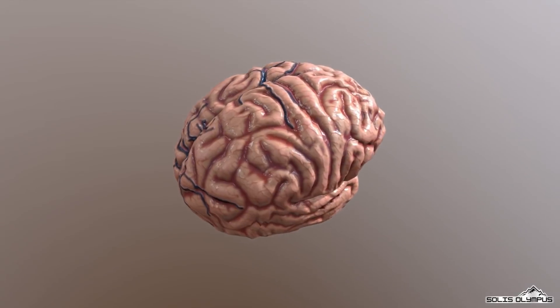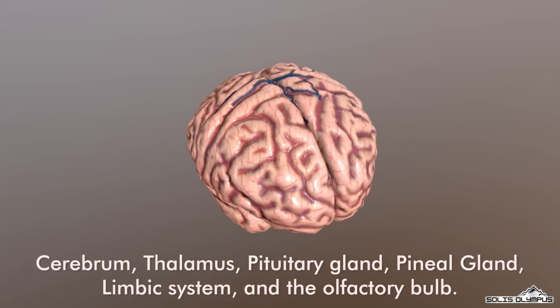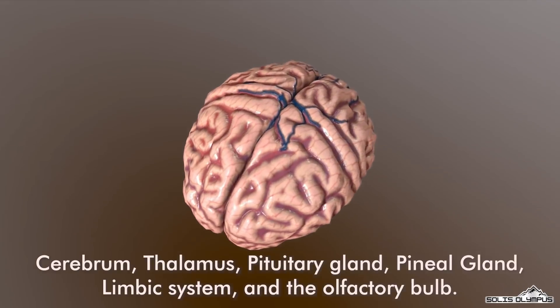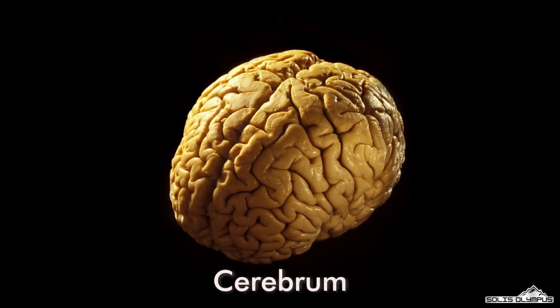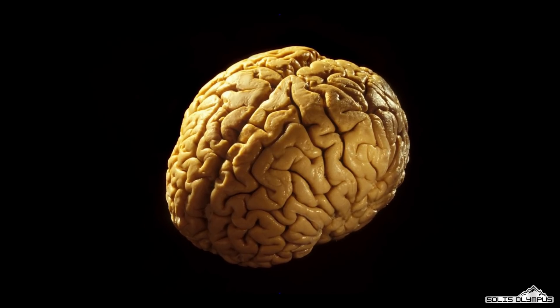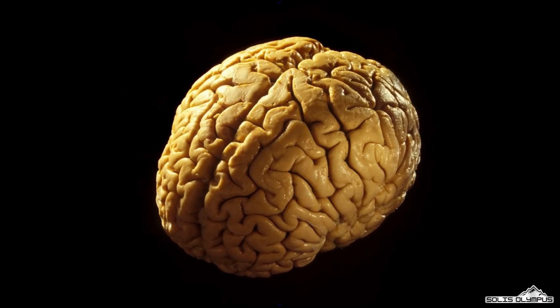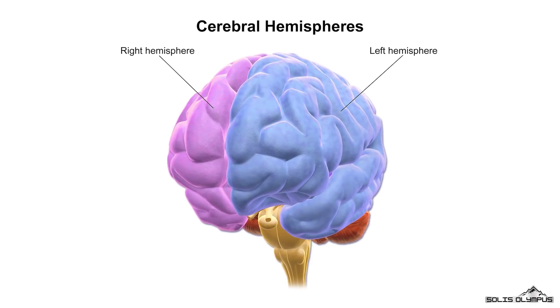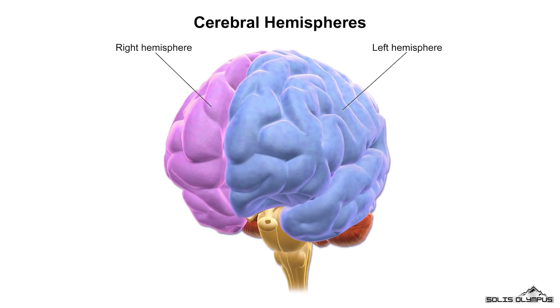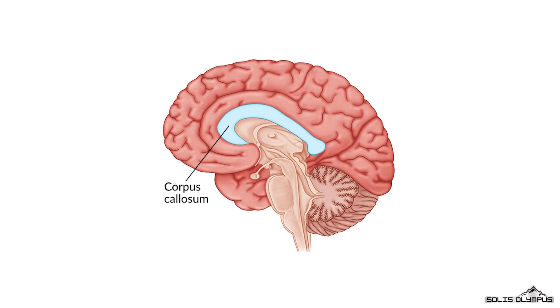Forebrain. The structures in the forebrain include the cerebrum, thalamus, pituitary gland, pineal gland, limbic system, and the olfactory bulb. The cerebrum is the largest part of the human brain and is associated with higher brain function such as thought and action. The cerebrum is divided into two halves, the right and left hemispheres. A bundle of axons, called the corpus callosum, connects the two hemispheres.